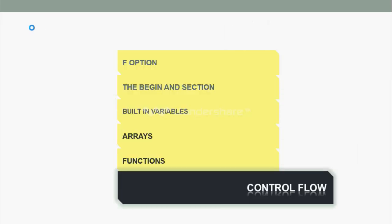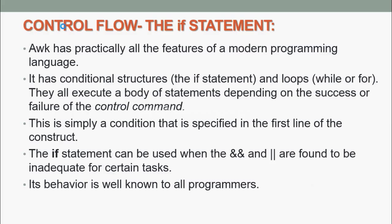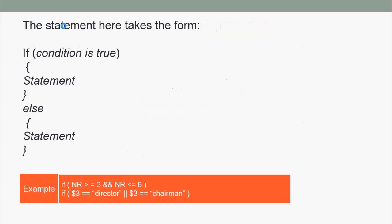Next, we are going to see control flow. In control flow, first we study the if statement. AWK has practically all the features of modern programming languages. It has conditional structures, that is the if statement, and loops, that is while or for. They all execute a body of statements depending on the success or failure of the control command. The if statement can be used when the ampersand and OR are found to be inadequate for certain tasks. Its behavior is well known to all programmers. The structure of the if statement is: if (condition) statement; else statement.